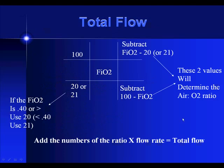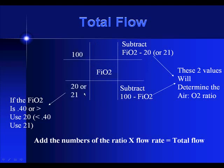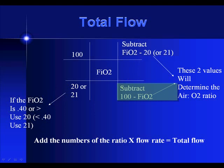Let's take a look at total flow. We can utilize what's known as the magic box to help us obtain the air entrainment ratios, then add those together and multiply by the flow rate to get total flow. The magic box is basically a tic-tac-toe box. In the center, we place the FiO2. The top left corner is 100, and the bottom right corner is either 20 or 21 based on the FiO2. If the FiO2 is 40% or greater, we use 20; if less than 40%, we use 21. We subtract in the top right box: FiO2 minus 20 or 21, and in the other box: 100 minus the FiO2. These two values give us the air entrainment ratio, which we add together and multiply by the set flow to get the total flow.